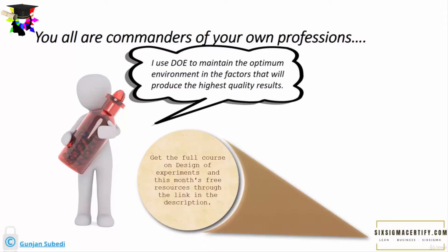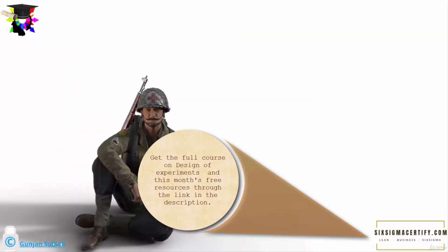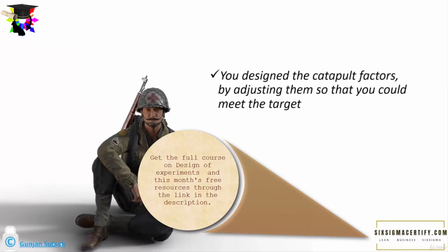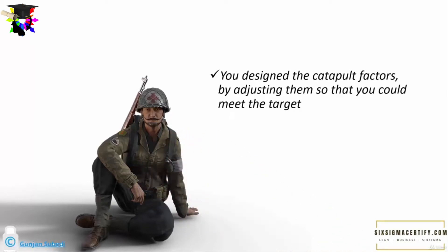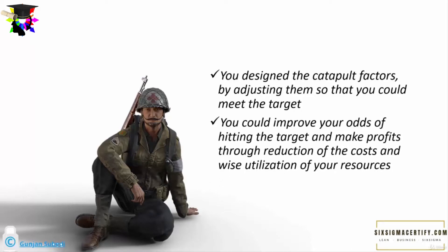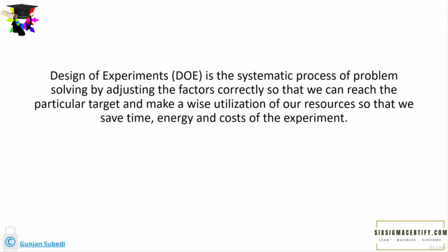Let us throw out all the theoretical definitions and make our own based on what we learned so far. Remember what we did when you were commander of the war? You designed the catapult factors by adjusting them so that you could meet the target, improving your odds of hitting it. You could make profits through reduction of cost and wise utilization of resources so that there were the least chances of failure. In summary, design of experiments is a systematic process of problem solving by adjusting the factors correctly so that we can reach a particular target and make wiser utilization of our resources, saving time, energy, and cost.